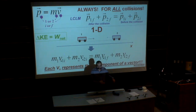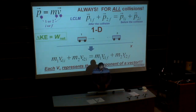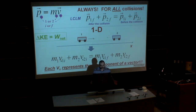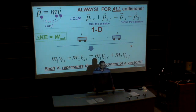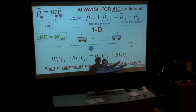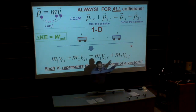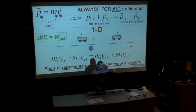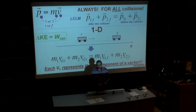Until we've solved the problem, we actually don't know which direction a cart will move after the collision. So if we don't know whether it will go left or right, how do we assign the velocity? The most convenient choice is to point it to the right and solve the problem. If the number comes out positive, it travels right. If it comes out negative, your assumption was wrong — in reality it travels to the left.